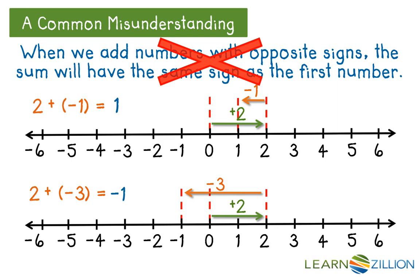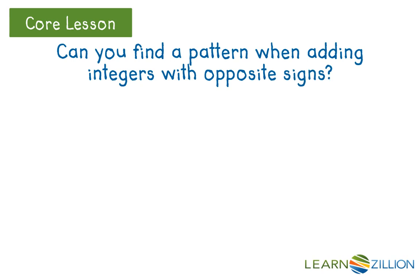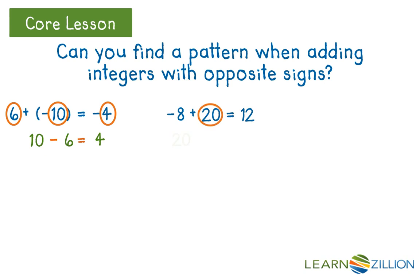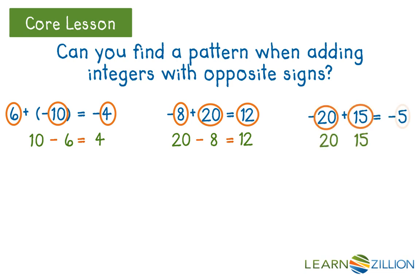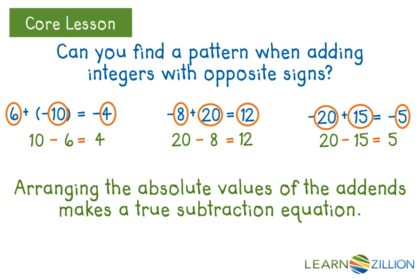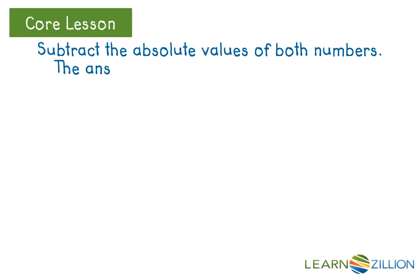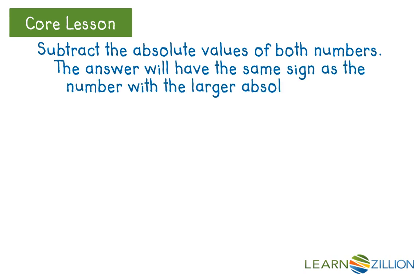So how can we find the sum without using a number line? Let's see if we can find a pattern when adding integers with opposite signs. A common algorithm is to subtract the absolute values of both numbers. The answer will have the same sign as the number with the larger absolute value.